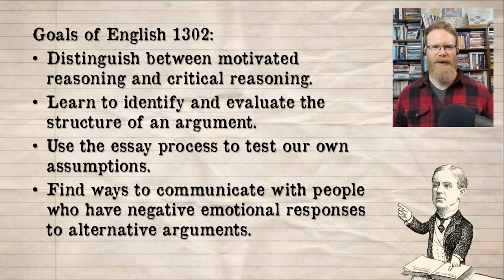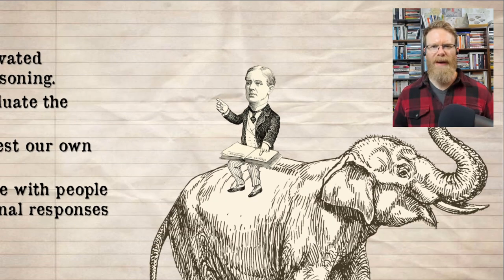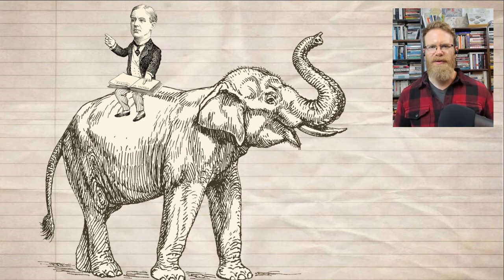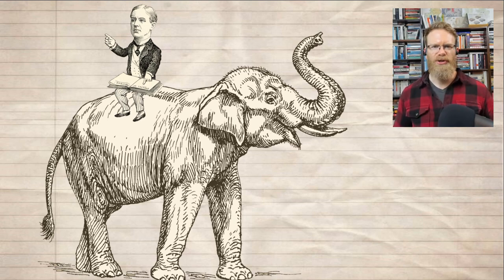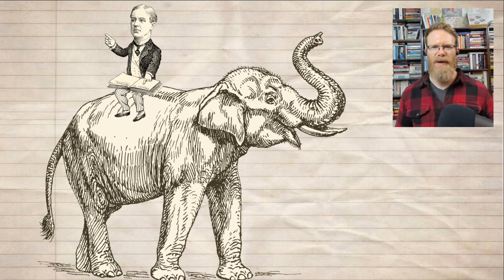The psychologist Jonathan Haidt compares the way the human mind works to a lawyer riding on the back of an elephant. The elephant in this metaphor is all of the background cognition the brain is doing at any given point — the generalizations, the stereotypes, the heuristics, these vague assumptions about the world that you use to get through a day. Most of the time they work fine, but they might be a little simplistic or overgeneralized.